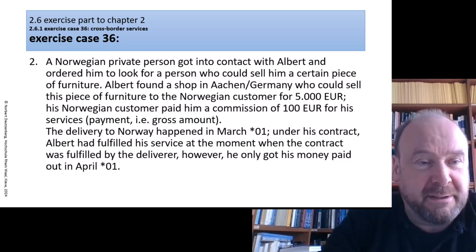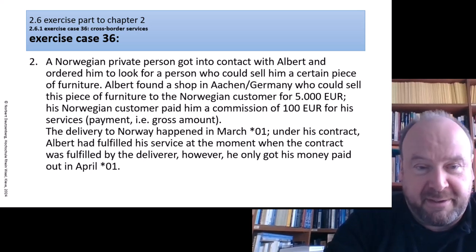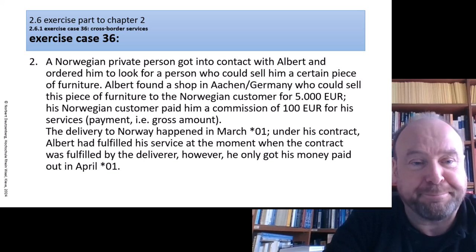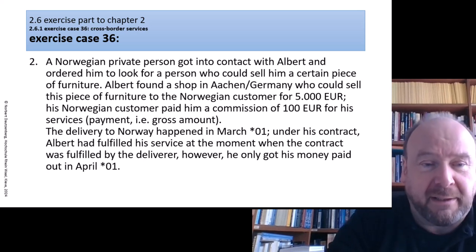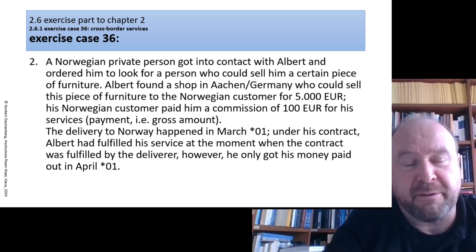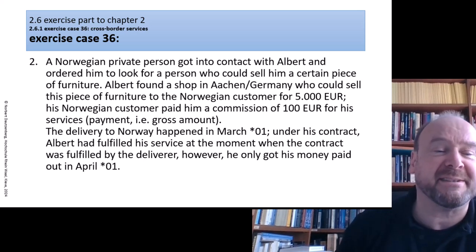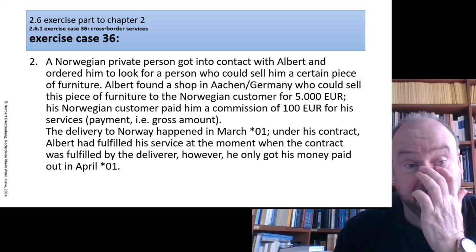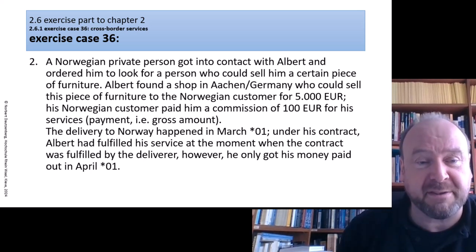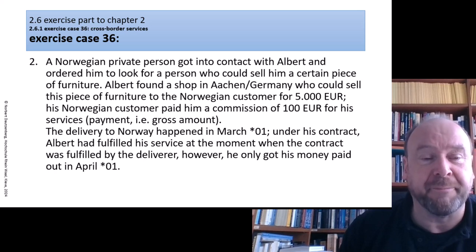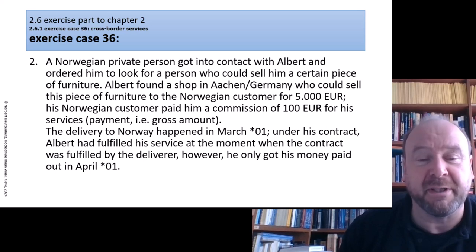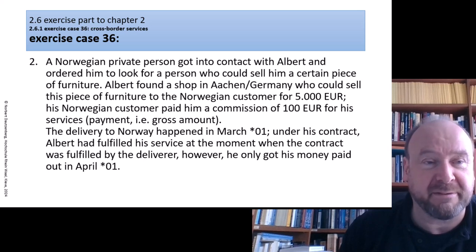Event number two: a Norwegian private person got into contact with Albert and ordered him to look for a person who could sell him a certain piece of furniture. Albert looks through all of Germany and finds a shop in Aachen who could sell this piece of furniture to the Norwegian customer for 5,000 euro. The Norwegian pays Albert a commission of 100 euro gross — so VAT is included. The delivery to Norway happened in March. Albert fulfilled his services at the moment when the contract was fulfilled by the deliverer, though he only received payment in April because the bank transfer took some time.